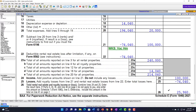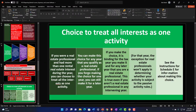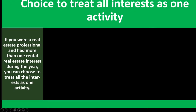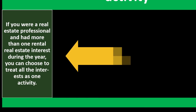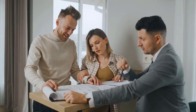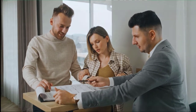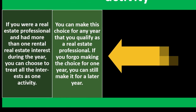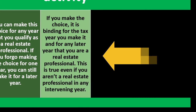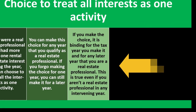A real estate professional with more than one rental interest can choose to treat all interests as one activity. You can make this election for any tax year you qualify as a real estate professional — even if you skip a year. Once made, it is binding for that year and all future years you remain a real estate professional.